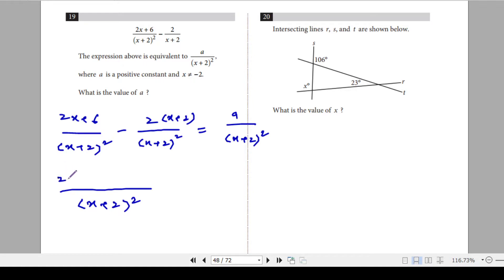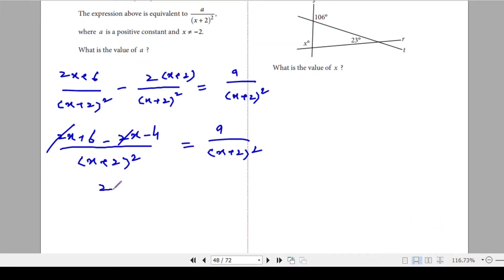And we can write 2x plus 6 minus 2x and minus 4. So that's a over (x+2)². So 2x and 2x can cancel. 6 minus 4 is 2. So a is actually 2. If you want to write it again in the next step, fine. But 2 over (x+2)² is equal to a over (x+2)². So a is in fact 2. So that's your answer. 2 is your answer.